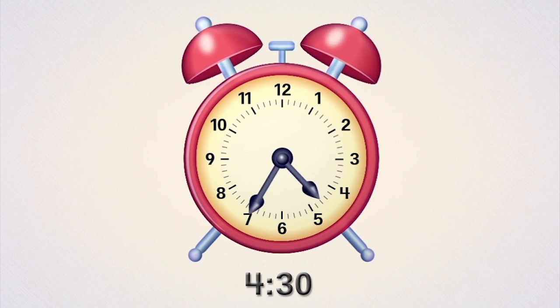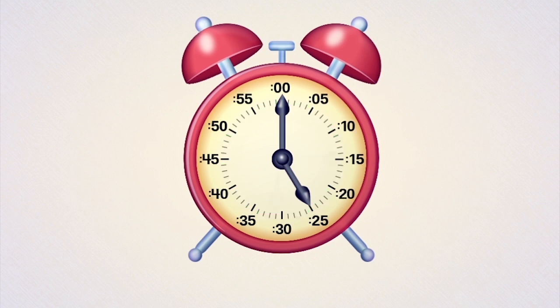When the hour hand reaches the five, it will be five o'clock. The numbers for the minutes are not usually written on a clock face. Instead, you might see tick marks that mark each minute. Every number on the clock marks five minutes.